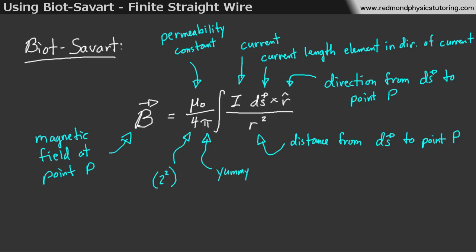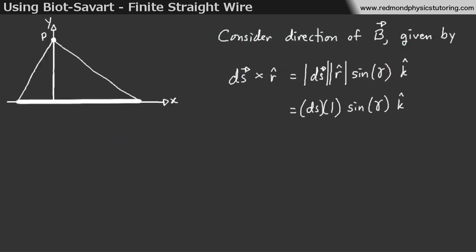All right. So, before we even do any math, we can actually use the right-hand rule to find the direction of the magnetic field at P. The direction, not the magnitude. We need to use Biot-Savart for the magnitude. So, we have dS cross r-hat. These are the only vector terms on the right-hand side, so these are what define the direction at P.